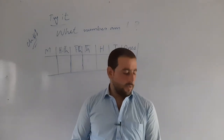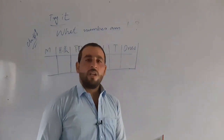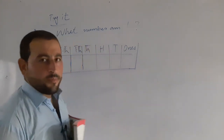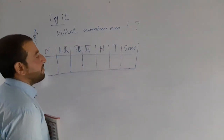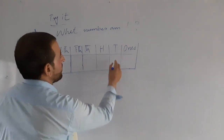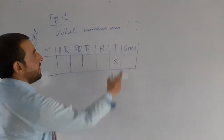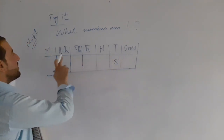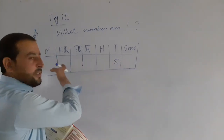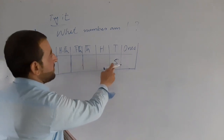I am a 7-digit number. My 10s digit is 5. There are less than 1,000 and over 10,000. The digits are: 1, 2, 3, 4, 5, 6, and 7.